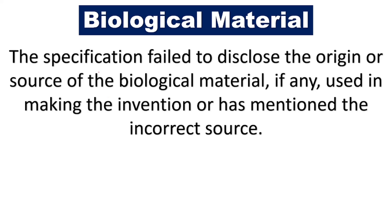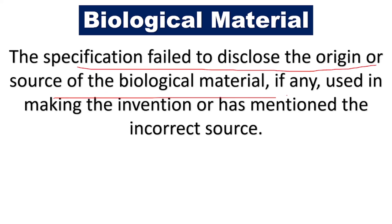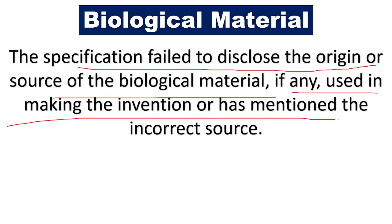The next ground relates to biological material — the applicant has failed to disclose the origin or source of biological material used in making the invention, or has mentioned an incorrect source. If any biological materials are used in the invention, then the applicant must properly mention from where that biological source has come. If the applicant fails to mention the source of the biological material, then it is eligible for pre-grant opposition.